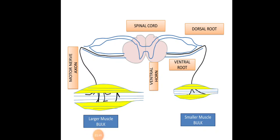Larger bulk muscles are supplied by larger motor units with larger axons, while smaller bulk muscles have smaller motor units with smaller axons. Larger motor units supply many fibers, primarily type 2 fibers, whereas smaller motor units supply fewer fibers, primarily type 1 fibers. Larger motor units are recruited in forceful contraction.